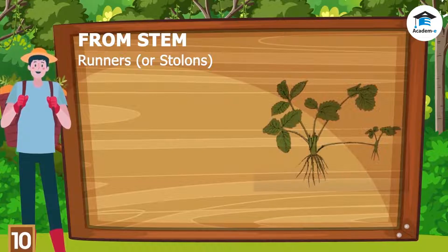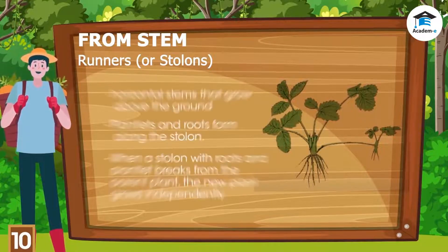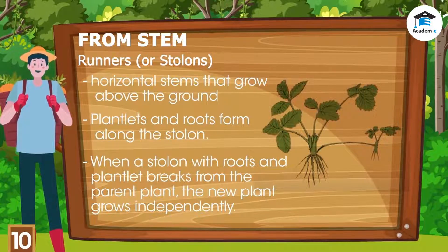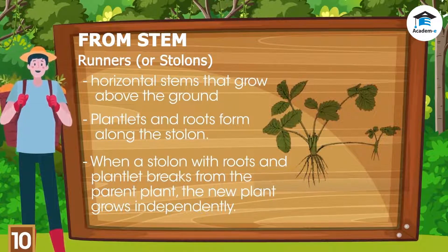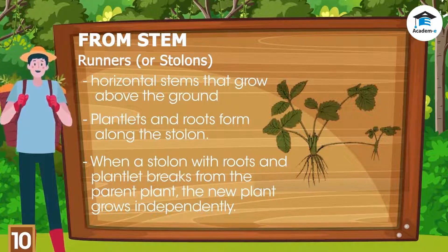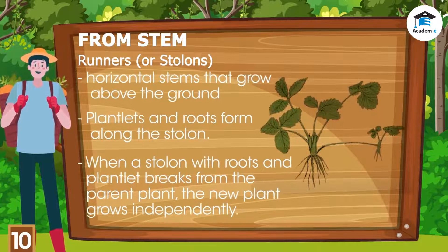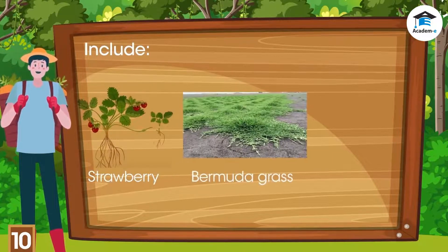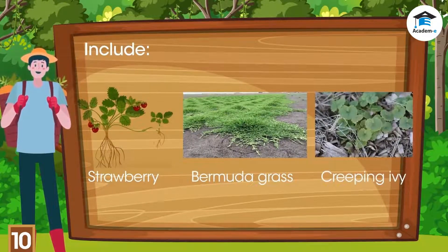Runners, also known as stolons, are horizontal stems that grow above the ground. Plantlets form along the stolon, and roots form where the stolon touches the ground. When a stolon with roots and a plantlet breaks from the parent plant, the new plant grows independently. Examples include strawberries, Bermuda grass, and creeping ivy.